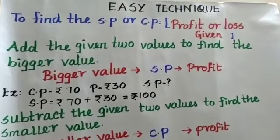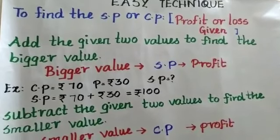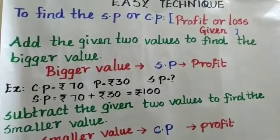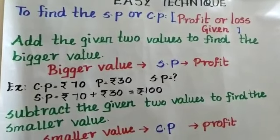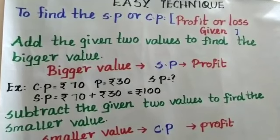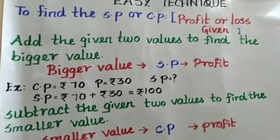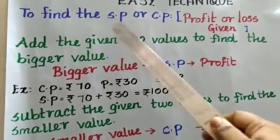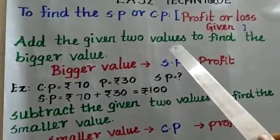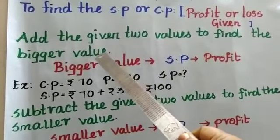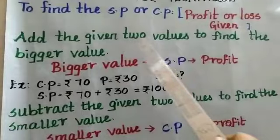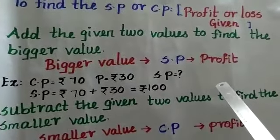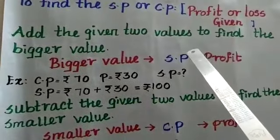Now I am going to tell you an easy technique to find the selling price or the cost price whenever the profit or loss is given. Add the given two values to find the bigger value. Whenever we are going to find the bigger value, we are supposed to add the given two values. In profit, selling price is the bigger value, so if you are going to find the selling price, we should add the given two values.